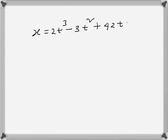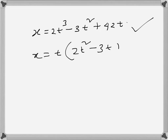The displacement of a particle is given by this equation. We have to show that it is initially at origin but never returns to origin. This can be written as — let's take t out — t times (2t² minus 3t plus 42).